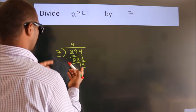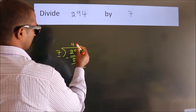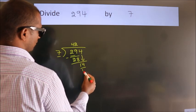When do we get 14? In the 7 table, 7 twos, 14.